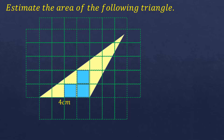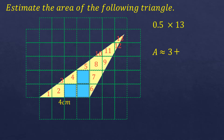We are going to count the partially shaded squares as 0.5, or half, each. There are 13 partially shaded parts. So the area of the triangle will be 3 fully shaded squares plus 0.5 times 13, which equals 6.5. So 3 plus 6.5 means the area of the triangle is approximately 9.5 square centimeters.